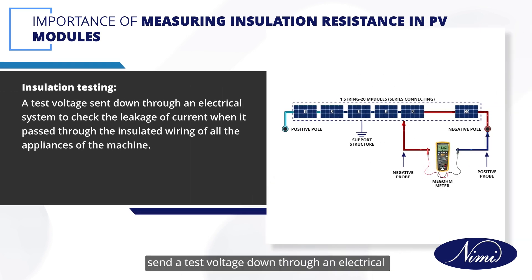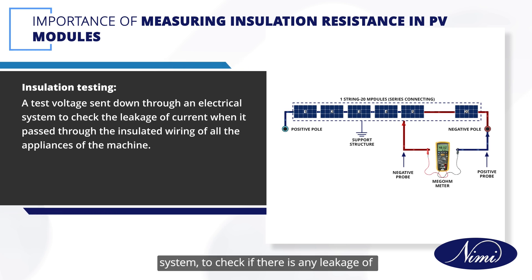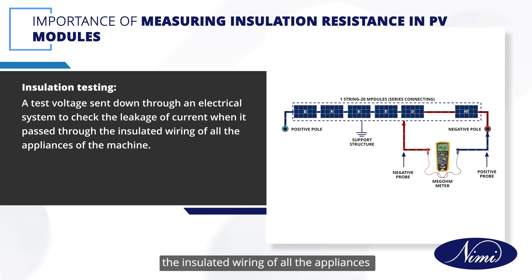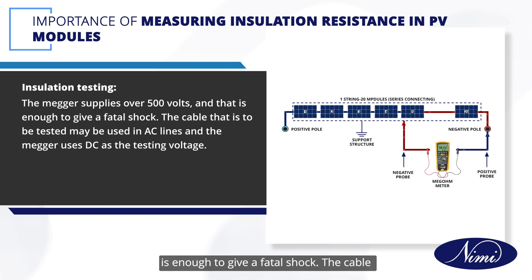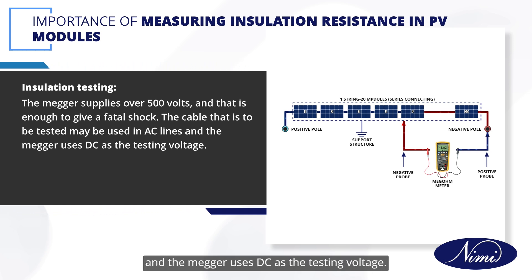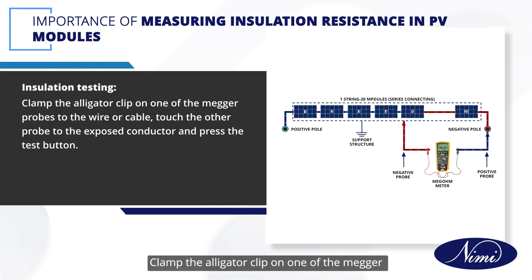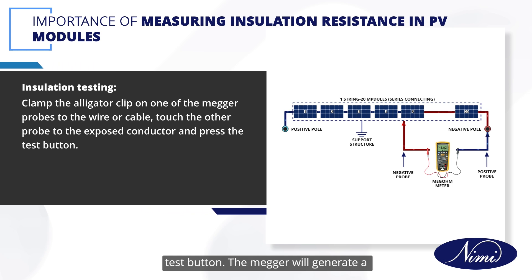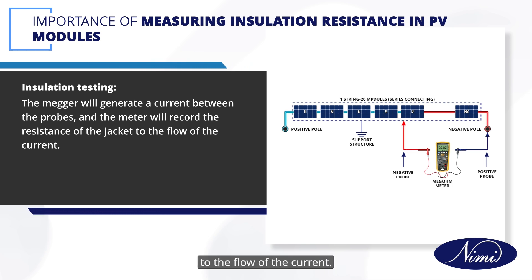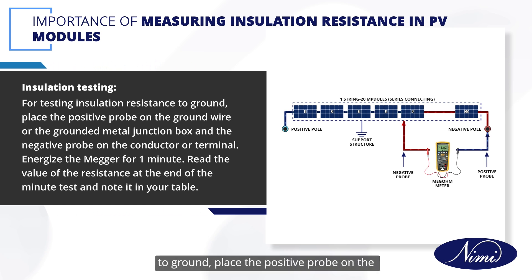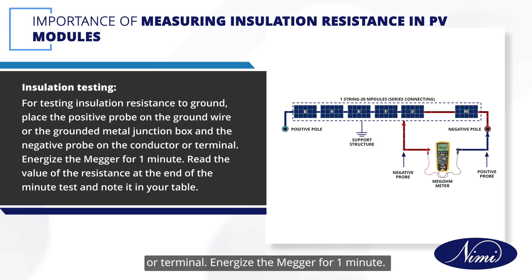In insulation testing using a Megger, we send a test voltage down through an electrical system to check if there is any leakage of current passing through the insulated wiring of all the appliances of the machine. The Megger supplies over 500V, which is enough to give a fatal shock. The cable to be tested may be used in AC lines, but the Megger uses DC as the testing voltage. The Megger will generate a current between the probes, and the meter will record the resistance of the jacket to the flow of current. If testing insulation resistance to ground, place the positive probe on the ground wire or the grounded metal junction box and the negative probe on the conductor or terminal. Energize the Megger for 1 minute, then read and record the resistance value.